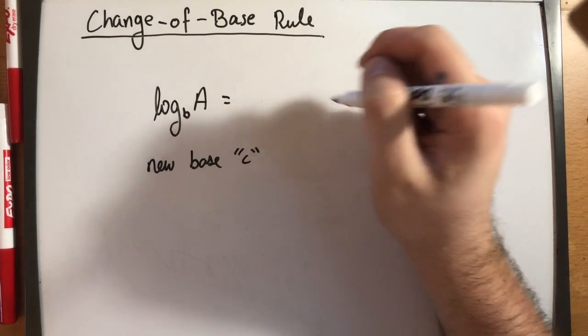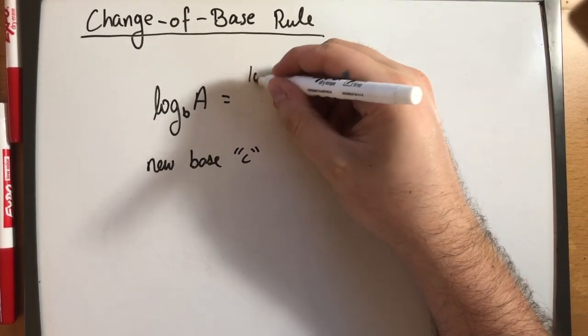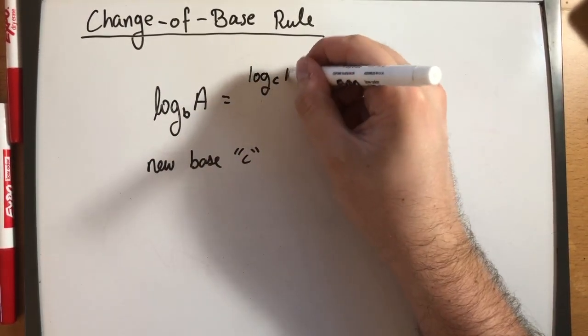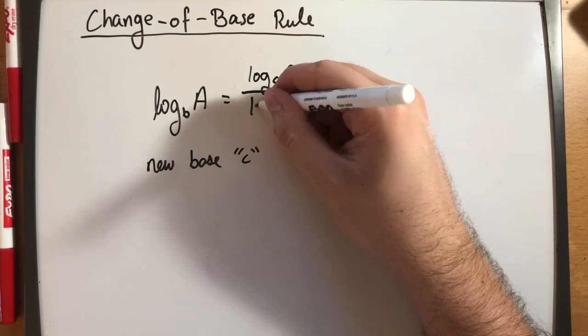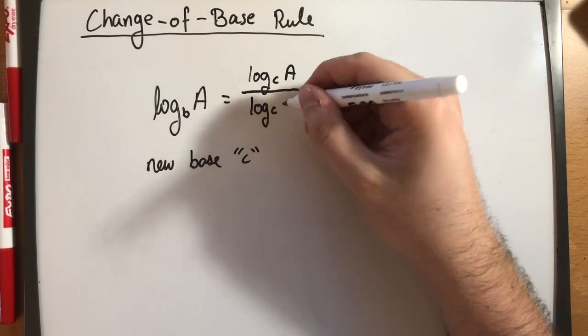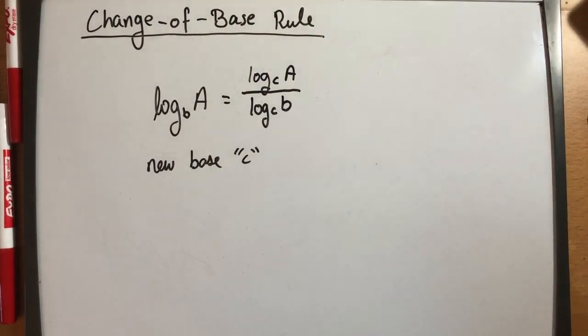So the correct change of base rule is if you want to be working with base C instead, yes you would get log base C of A but you're going to have to divide that by log base C of the old base B.